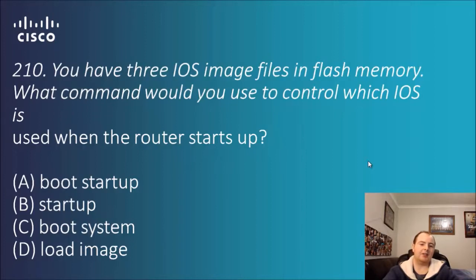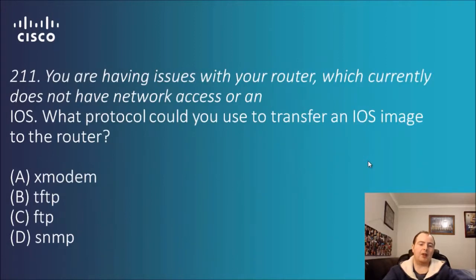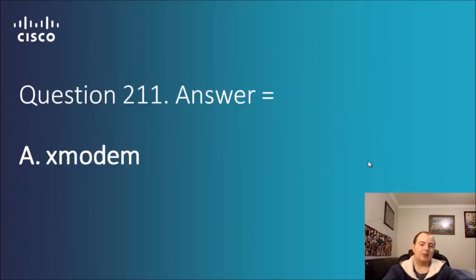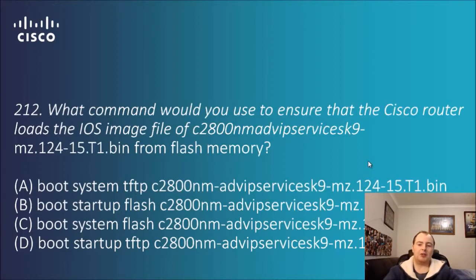Question 210: you have three IOS image files in flash memory. What command would you use to control which IOS is used when the router starts up? The answer is 'boot system'. Question 211: you are having issues with your router which currently does not have network access or an IOS. What protocol could you use to transfer an IOS image to the router? Options are xmodem, TFTP, FTP, SNMP. The answer is xmodem — you can use the console port to transfer the IOS, though it's slower than copying from a TFTP server.